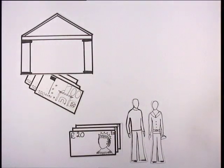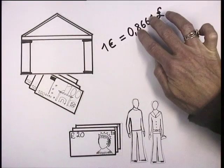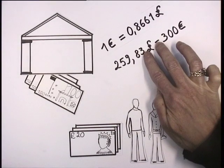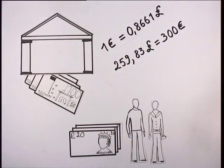At the time of the transaction, 1 euro is 0.8661 pounds. John and Mary will get £259.83 for their 300 euros, amount free of brokerage fees.